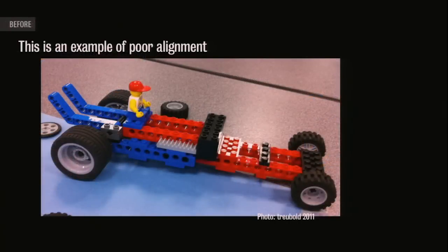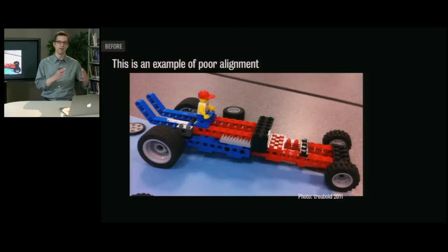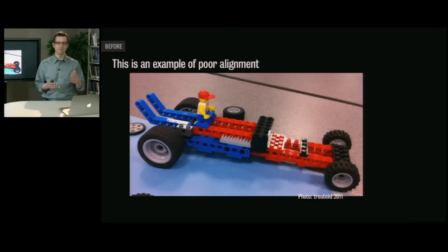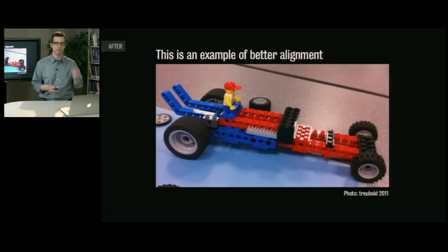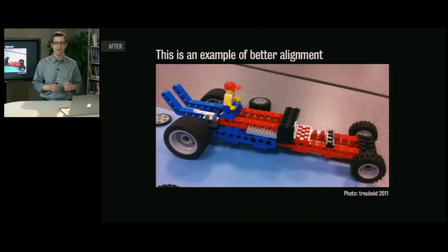Alignment is pretty simple — it's just like it sounds. You want elements on the screen to align with one another, whether that's left alignment or center alignment. In the example here, I've got a photo with some text at the top that's just kind of hanging off to the side. Simply by aligning that text with the edge of the photo on the top and the bottom, I've cleaned up that slide and made it look a lot more professional.